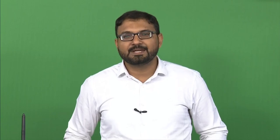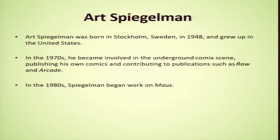Art Spiegelman is the one we are moving ahead to in this lecture. He is an American cartoonist, editor and comic advocate who is best known for his graphic novel Maus. Spiegelman was born in Stockholm, Sweden in 1948 and grew up in the United States. In the 1970s he became involved in the underground comics scene, publishing his own comics and contributing to publications such as Raw and Arcade. And in the 1980s Spiegelman began work on Maus.